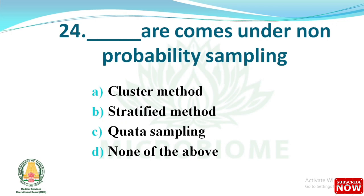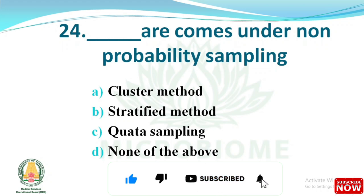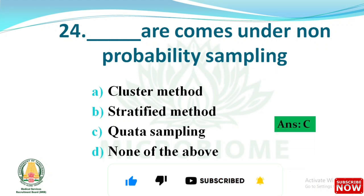Next question: which method comes under non-probability sampling? The options are cluster method, stratified method, quarter sampling, and none of the above. The right answer is option C: quarter sampling.